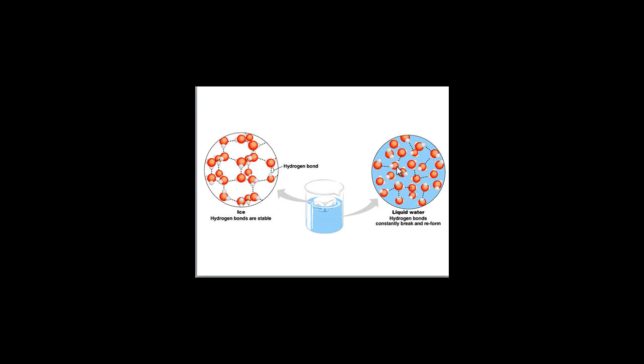and some water molecules can now start to slip closer together than they can while they were in the ice state. So, ice is actually about 10% less dense than water at around 4 degrees Celsius.